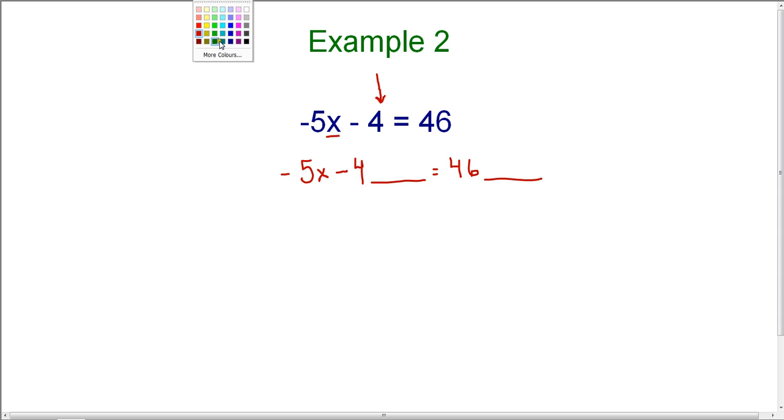In order to get rid of the minus 4, we need to do the opposite. The opposite of minus 4 is to add 4. And since I need to add 4 to the left hand side, I must also add 4 to the right hand side. On the left hand side, this creates the problem negative 4 plus 4. We know that negative 4 plus 4 is 0, therefore it's gone.